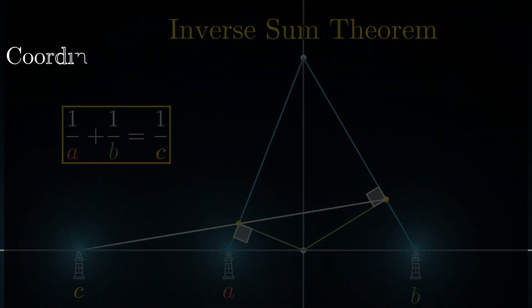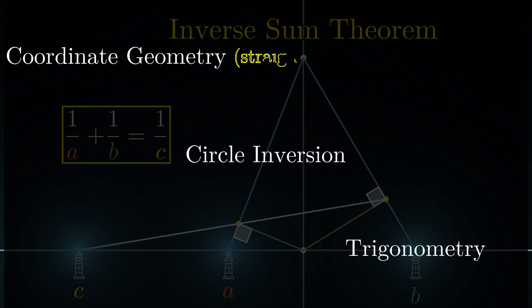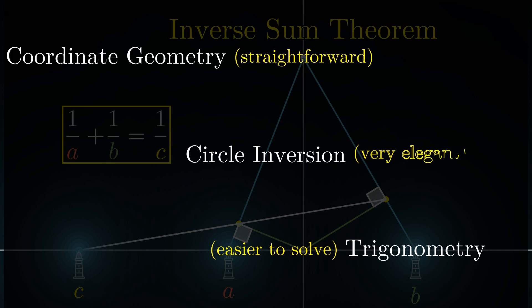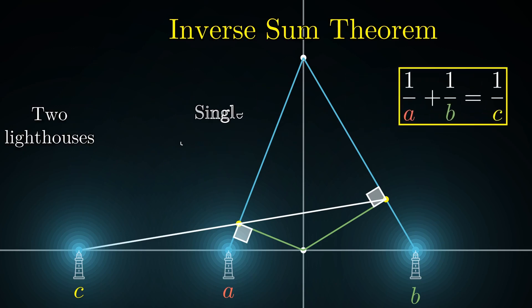Why is that true? It follows from a couple of geometric and trigonometric ideas that intertwine neatly to give this beautiful result. I have three proofs of this result in a blog post linked in the video description, and I would encourage those interested to pause and try to prove it themselves. We now have a way of replacing two lighthouses by a single lighthouse placed at the right point. But we actually want to go in the other direction: replace a single lighthouse by two lighthouses without changing the apparent brightness.